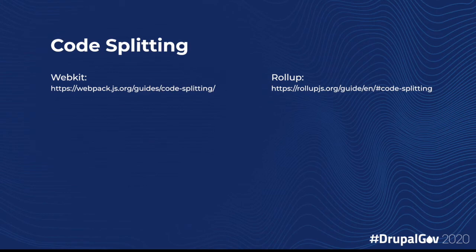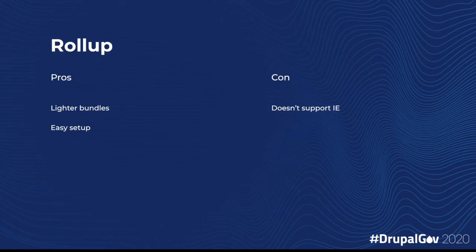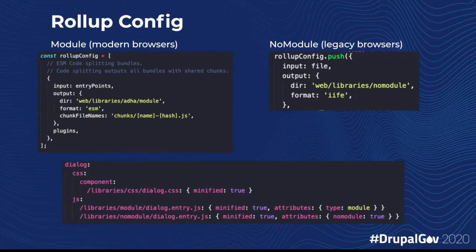We can also use code splitting. For sites with several JavaScript widgets, code splitting is a good option to cut down on package size by splitting out commonly used chunks and dynamically loading them on demand. Both Webpack and Rollup have code splitting options. Webpack has the greatest browser support for dynamically loading chunks, but it achieves this by adding a lot of boilerplate to each bundle, which can wipe out the gains made by code splitting in the first place. Rollup uses ES6 module loading for its code splitting, which has no support in Internet Explorer but wide support in all other major browsers. We can get around this by outputting a traditional bundle specifically for IE while allowing modern browsers to take advantage of the performance boost.